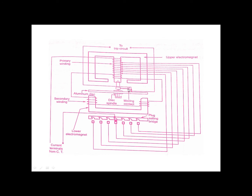As the disc moves, it carries the moving contact, which then closes with the fixed contact. As it closes, the fixed contact — which is the terminal of the trip circuit — completes the circuit. The trip circuit then signals that the system is in a dangerous situation. This is the simple basic principle of the non-directional over current relay.